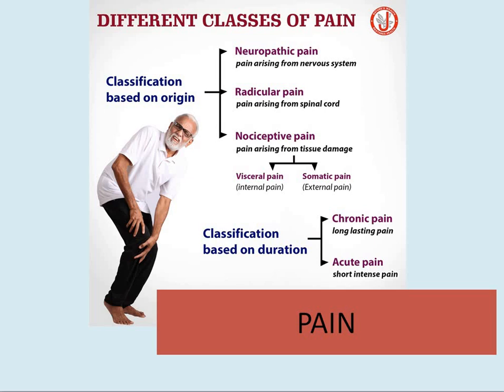There are different classes of pain. Pain classification is based on origin and duration. Based on origin, we speak about neuropathic pain — pain arising from the nervous system — radicular pain, arising from the spinal cord, or nociceptive pain, arising from tissue damage, which can be visceral or somatic.